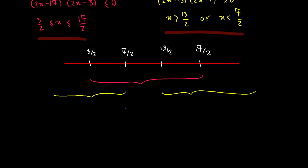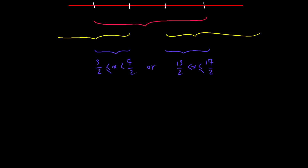The intersection gives us: x lies between 3 halves and 7 halves, or x lies between 13 halves and 17 halves. Notice that both 17 halves and 3 halves are included in the solution set.